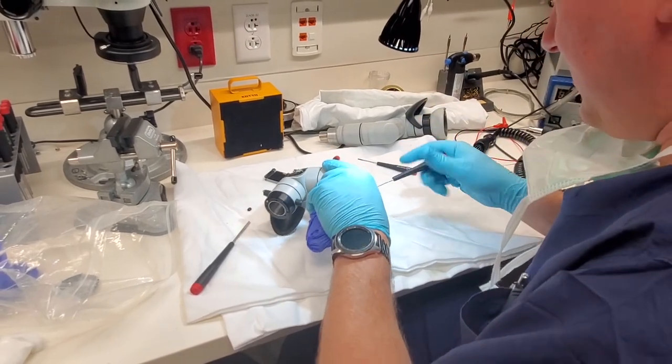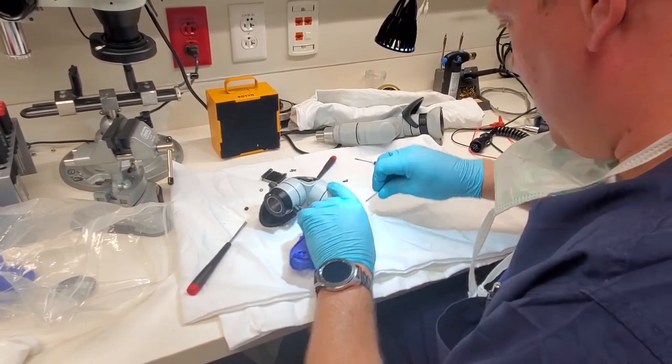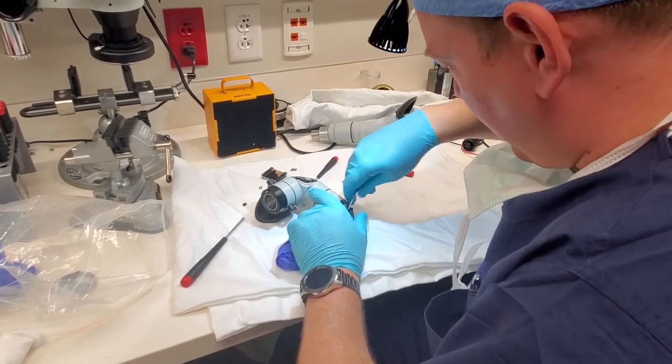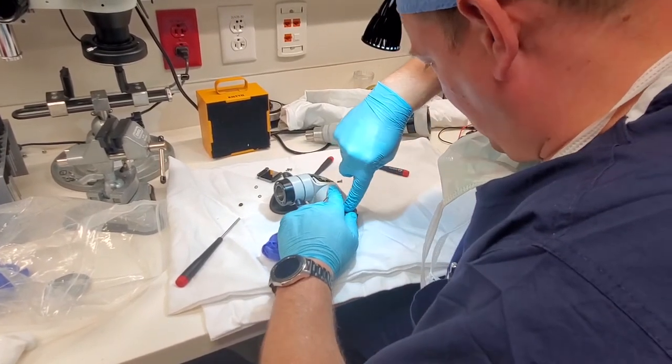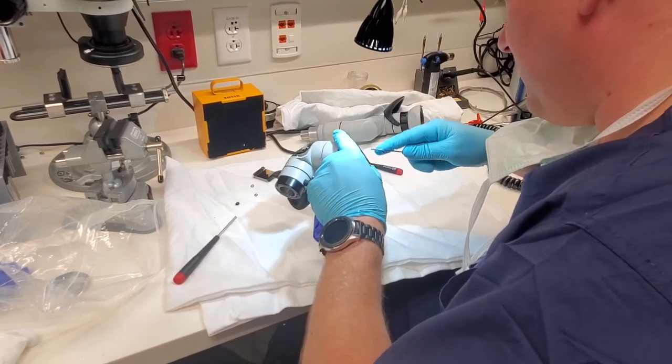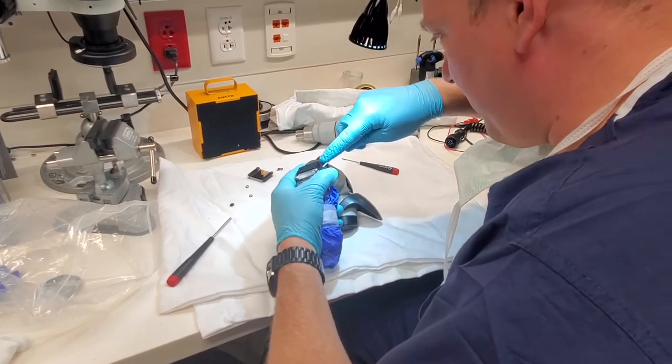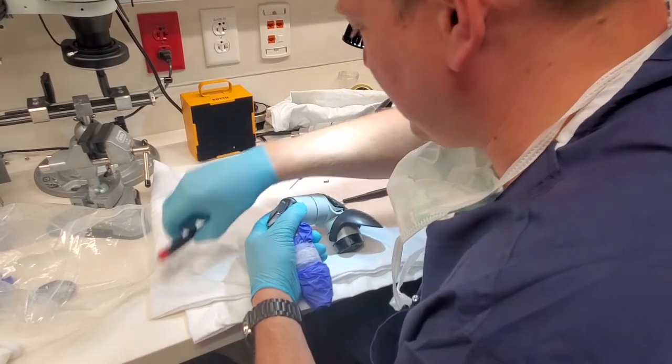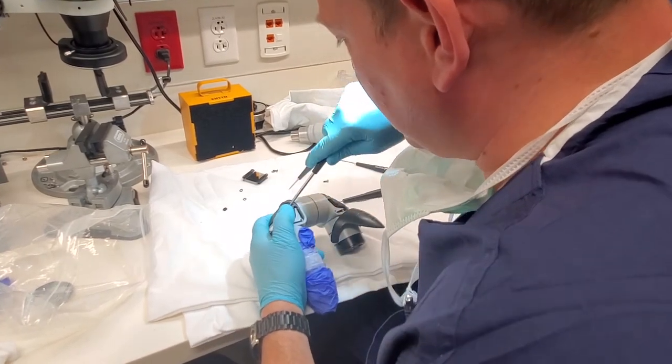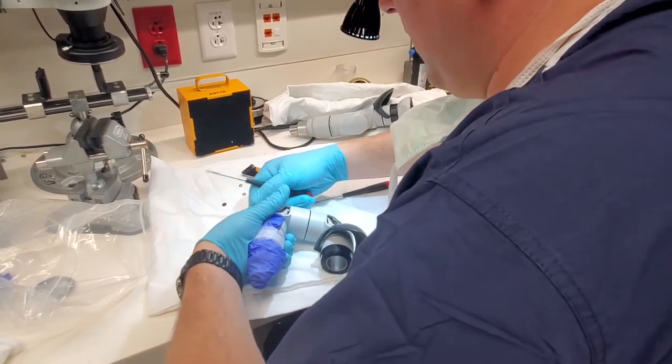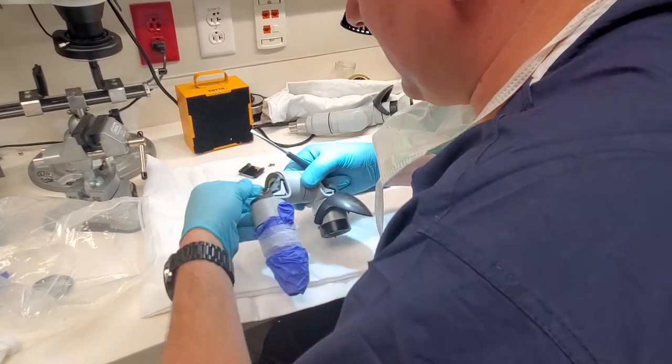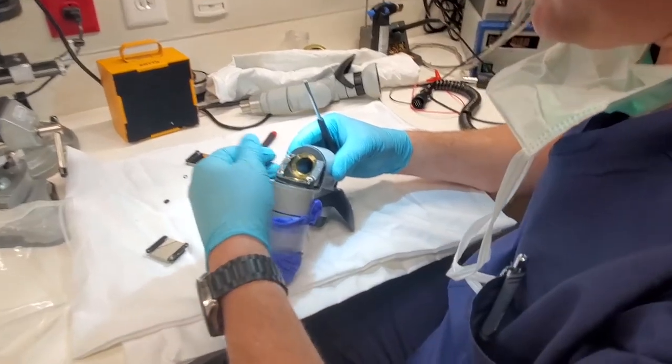These locking observer tubes can retail from four thousand to nine thousand dollars so they're not cheap. I don't recommend people just start tearing them apart. I've done quite a few of these, I've fixed them, and this guy here is just my demo unit so it doesn't really matter.